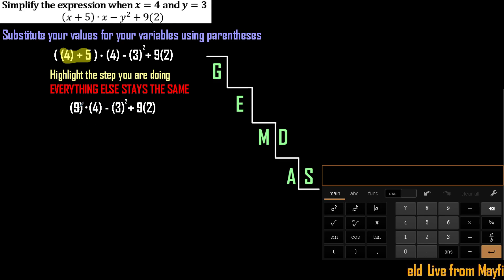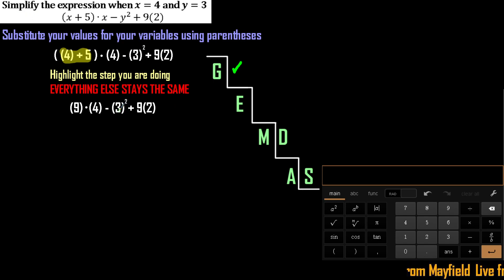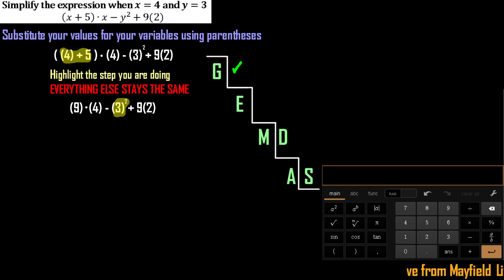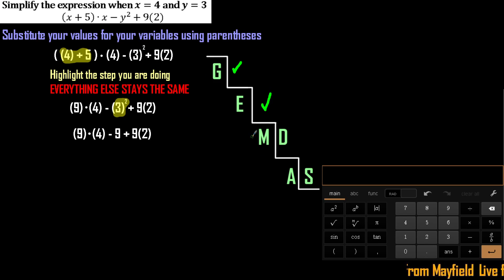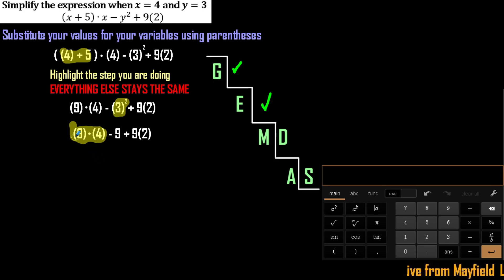We don't have any grouping symbols left to work inside. What about exponents? Yes — we have 3 squared. There's a negative outside of it, but we do one thing at a time: 3 squared is 9. Everything else stays the same. No other exponents, so we move to multiplication and division. Work to the far left first: 9 times 4. That dot means multiply, and parentheses next to a number also means multiply.